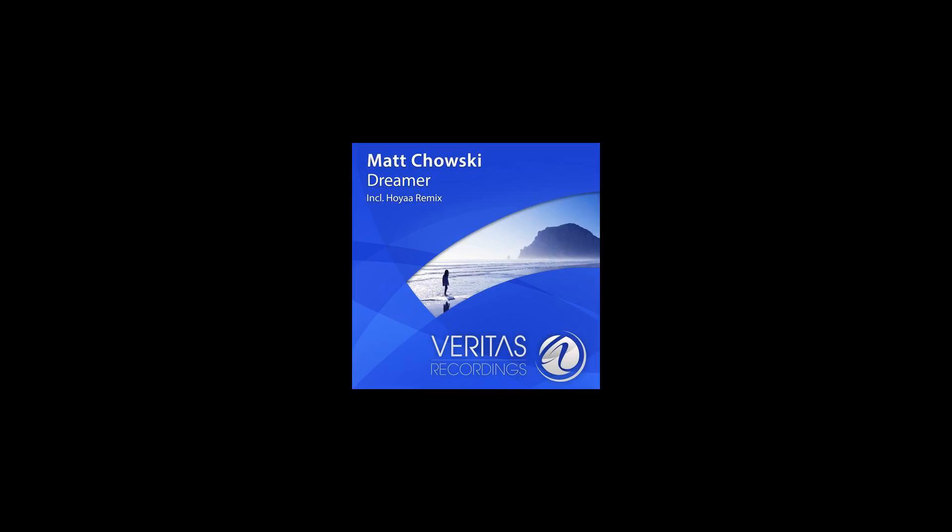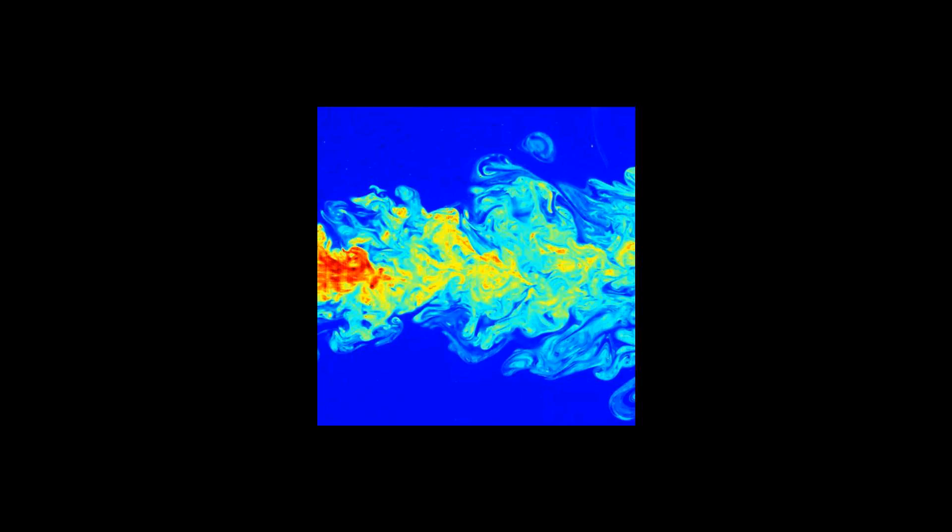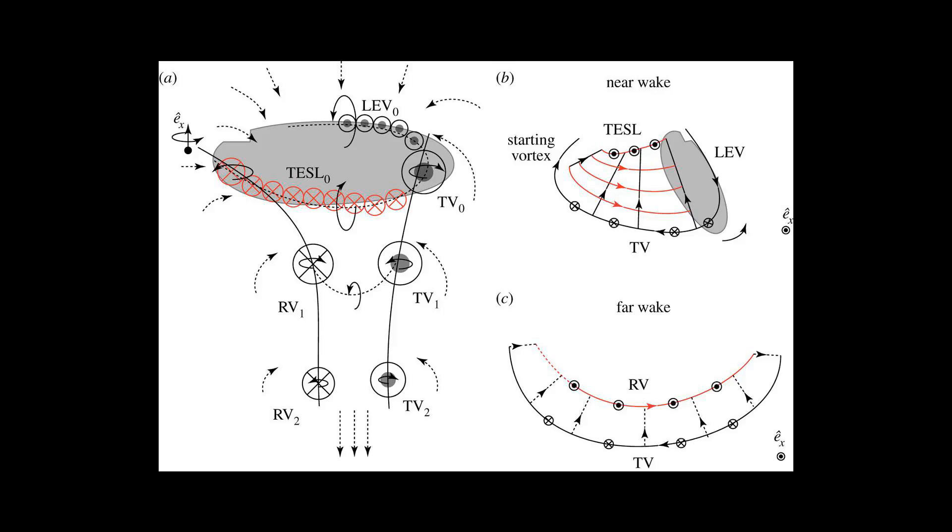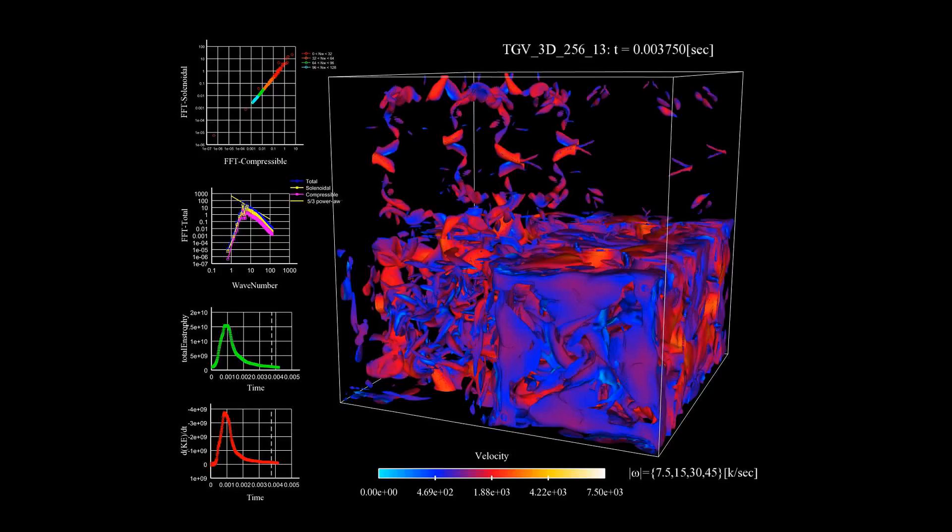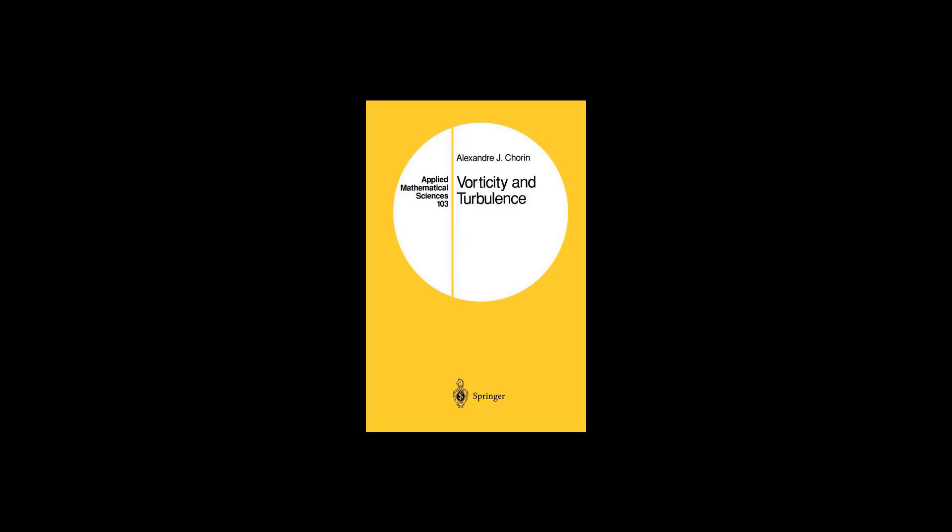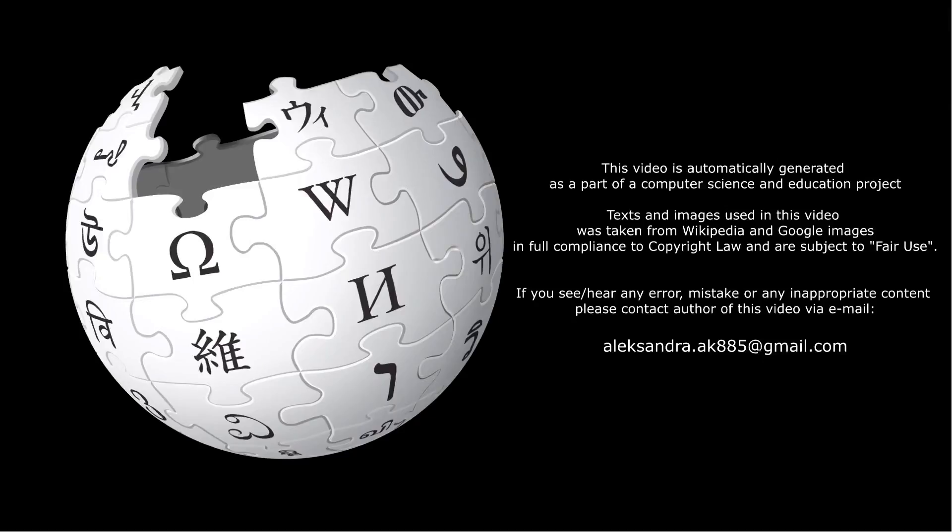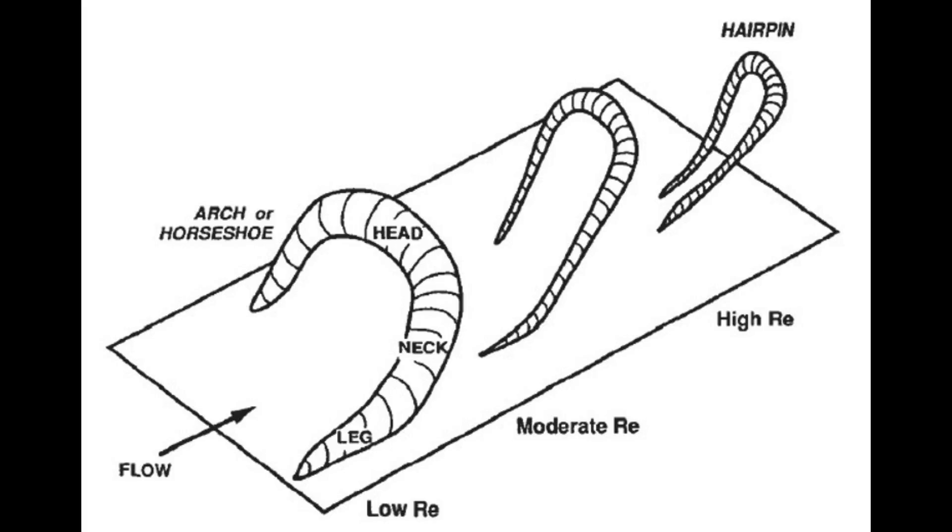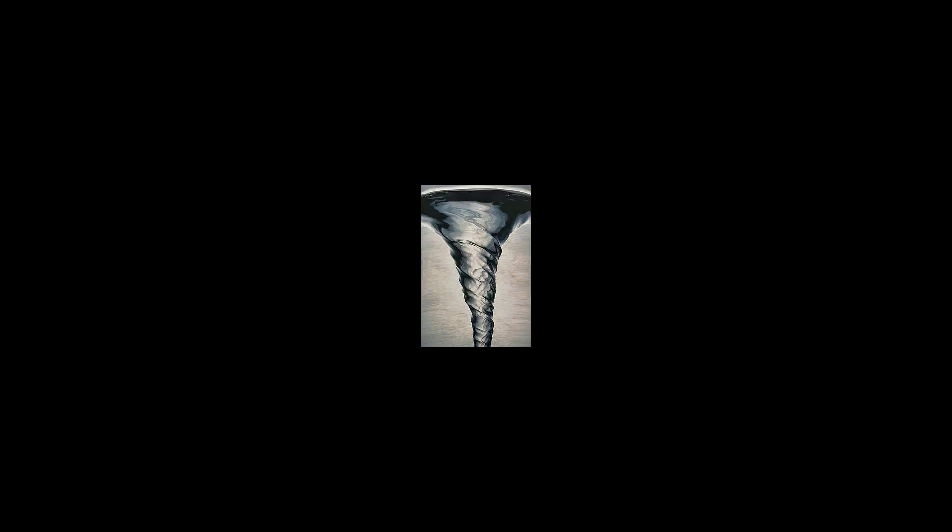For incompressible flow, due to volume conservation of fluid elements, the lengthening implies thinning of the fluid elements in the directions perpendicular to the stretching direction. This reduces the radial length scale of the associated vorticity. Finally, at the small scales of the order of the Kolmogorov microscales, the turbulence kinetic energy is dissipated into heat through the action of molecular viscosity.